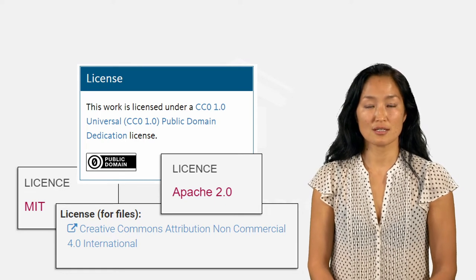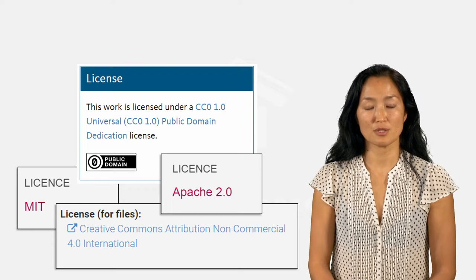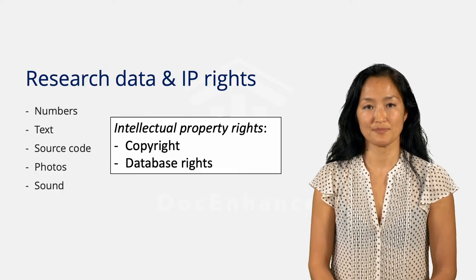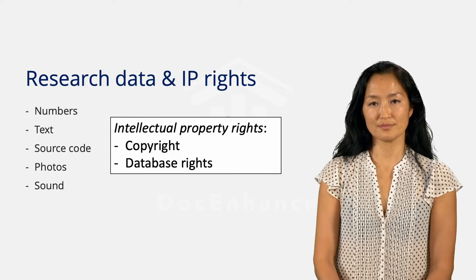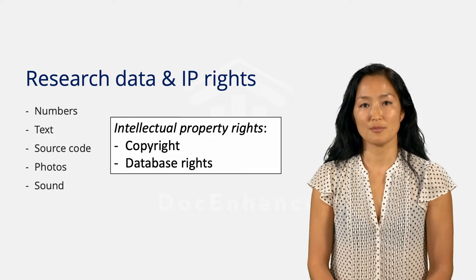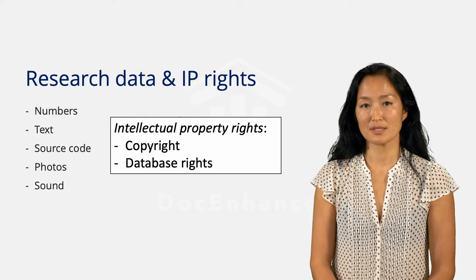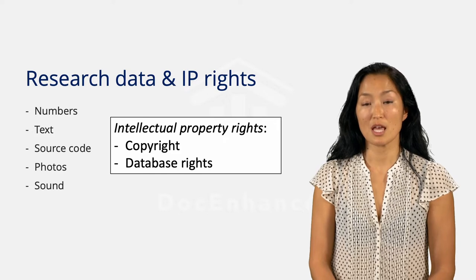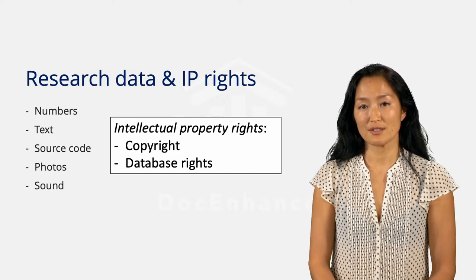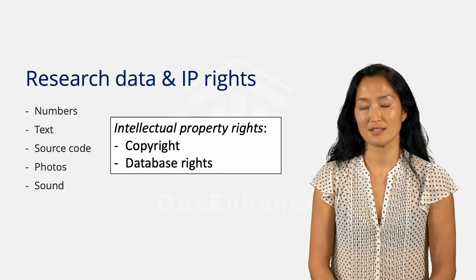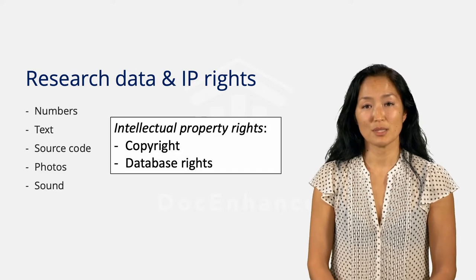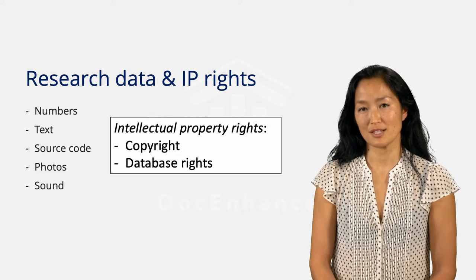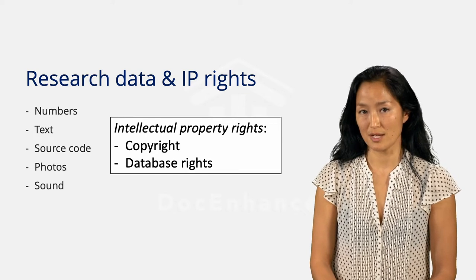But first, let's talk about what makes it possible for someone to posit a license. Research data come in different forms and types: numbers and text, source code, images and sound recordings. These are among the usual types of evidence meant to validate one's research findings. These bundles of information may be protected by intellectual property rights, such as copyright and database rights.